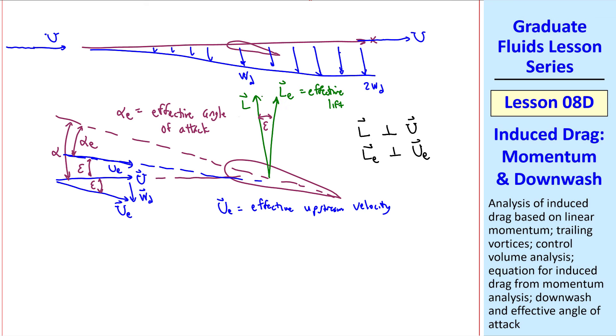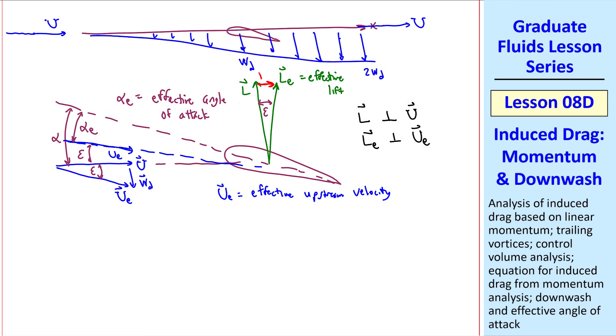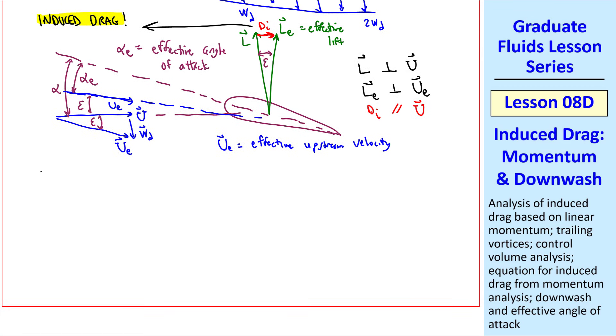Compared to L, there's an additional component parallel to U, and that will be the induced drag. Di is parallel to U by definition. Thus, we have another explanation for induced drag. Again, this is just qualitative, but it turns out that lift coefficient increases like angle of attack alpha, in other words, it's linear, but induced drag coefficient increases like alpha squared, where we define CdI as induced drag over one-half rho U squared A. This A, by the way, is not the same as that of the face in our control volume. This is the planform area of the wing.